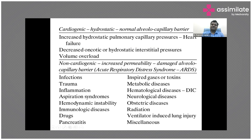Pulmonary edema can also be classified based on cardiogenic and non-cardiogenic causes. Cardiogenic causes are mainly due to increased hydrostatic pulmonary capillary pressures — like heart failure — decreased oncotic or diastolic interstitial pressures, or volume overload. Non-cardiogenic causes are mainly based on increased pulmonary vascular permeability due to damage of the endothelium, epithelium, or interstitium. Anything which causes damage to the alveolo-capillary barrier causes non-cardiogenic pulmonary edema, as seen in ARDS.